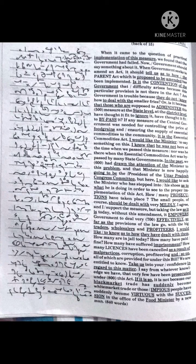Is it the contention of the government that difficulty arises because this particular provision is not there in the act? Are government in trouble because they do not know how to deal with the smaller fries? Or is it because those who are supposed to administer this measure at the state level, at the district level, have thought it fit to ignore it, have thought it fit to bypass it? If any measure of the central government was needed for controlling the price of food grains and ensuring the supply of essential commodities to the community, it is the Essential Commodities Act.